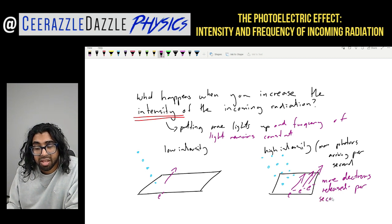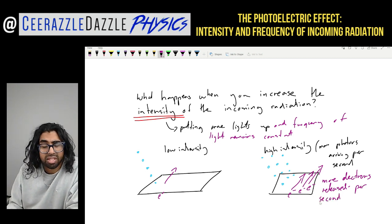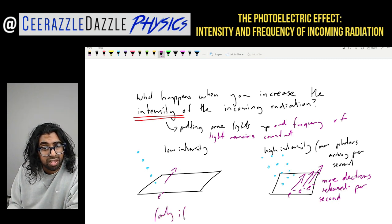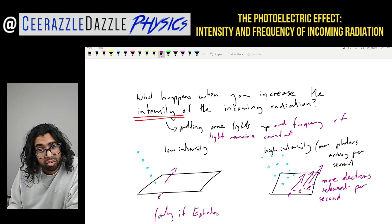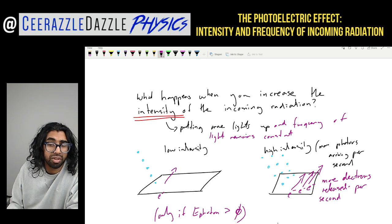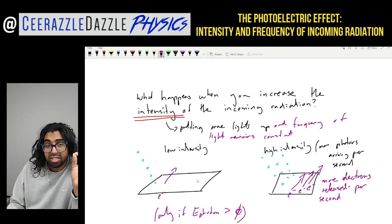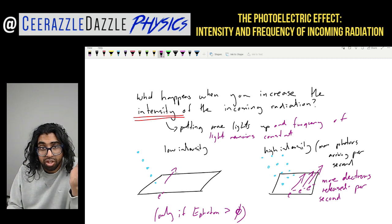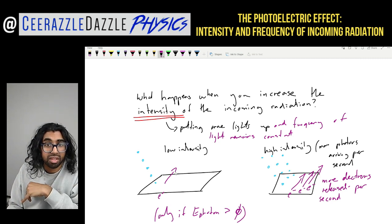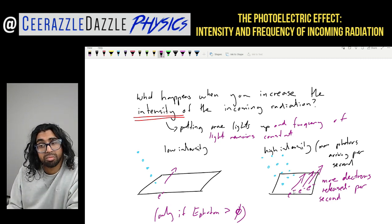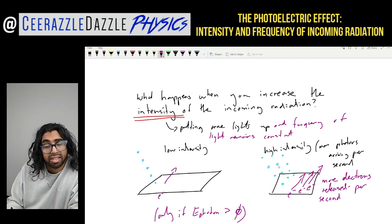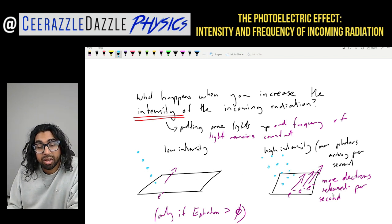This is solely dependent on whether the energy of the photon E_photon is greater than the work function. This only applies if E_photon is greater than φ, because if you increase the intensity you have not changed the frequency — you've simply changed the number of photons arriving. So high intensity results in more electrons released per second, but only if the energy of the photon is greater than the work function.